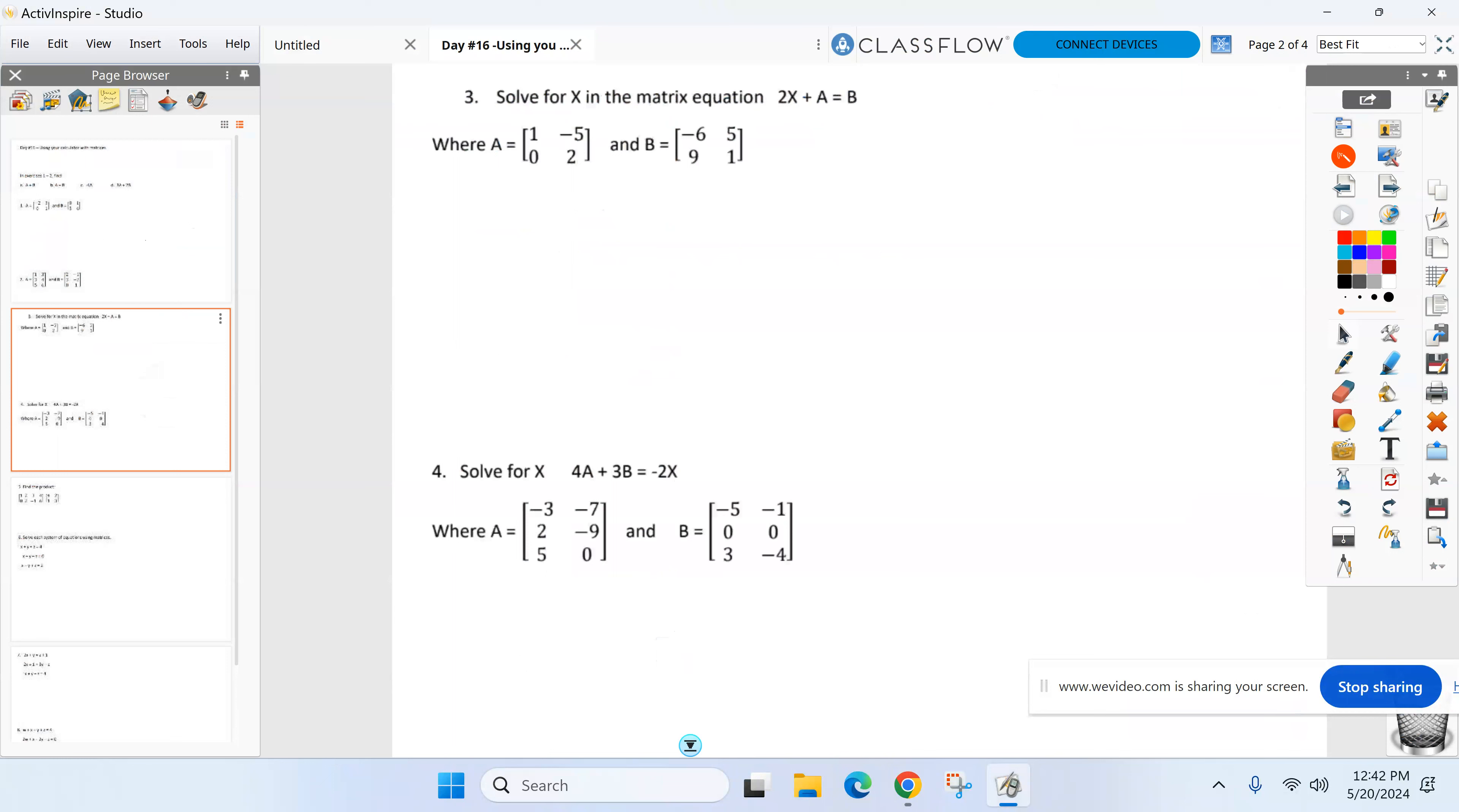Everyone comfortable with that so I can move on? Okay, because I want you guys to have enough time to do the delta math. Next one here, number three. Take a look - solve for X. Remember we did these? You still have to do that, your calculator doesn't do everything for you. You got to make sure you solve for X, so move the A over so 2X equals B minus A.